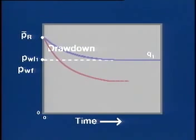If the flow rate is a higher value, say Q sub 2, the stabilized wellbore flowing pressure will drop to P sub WF2.